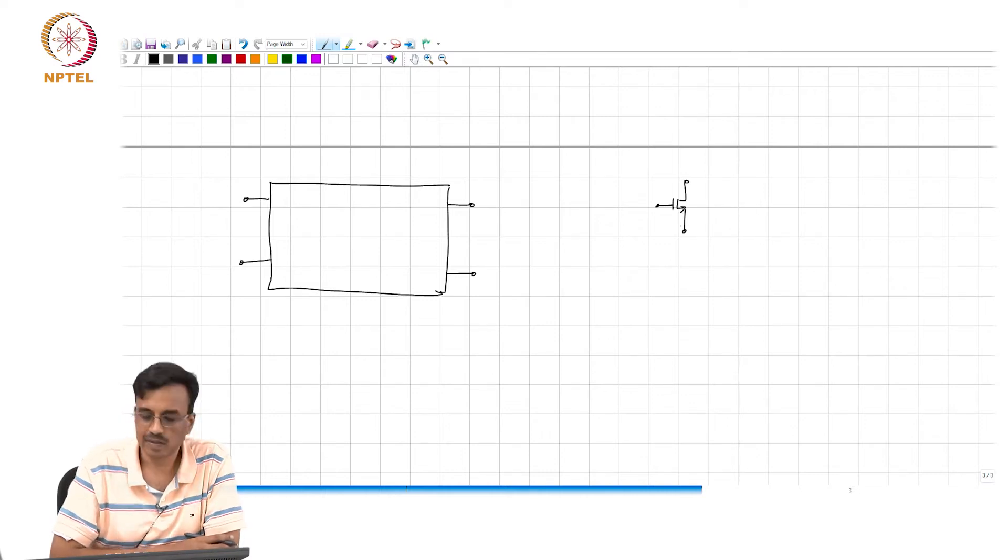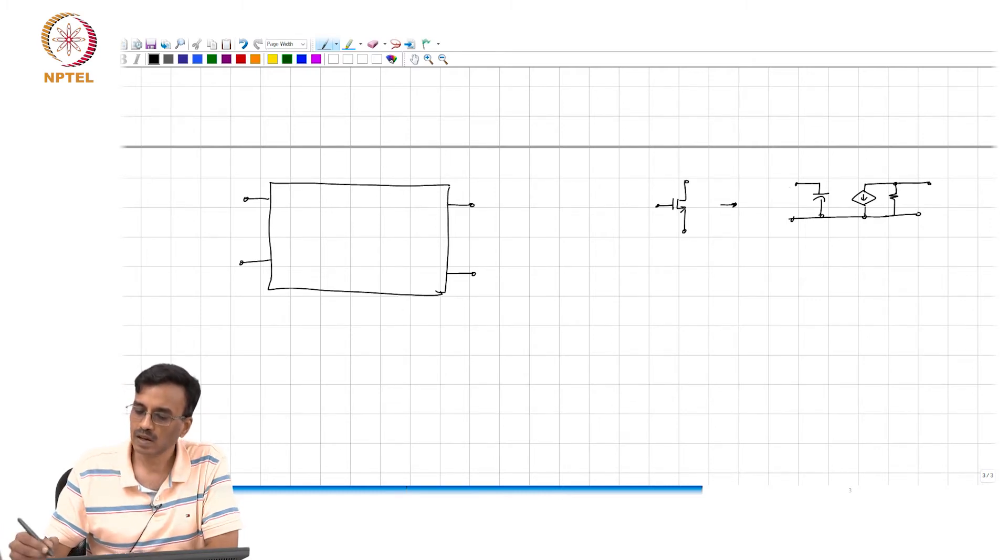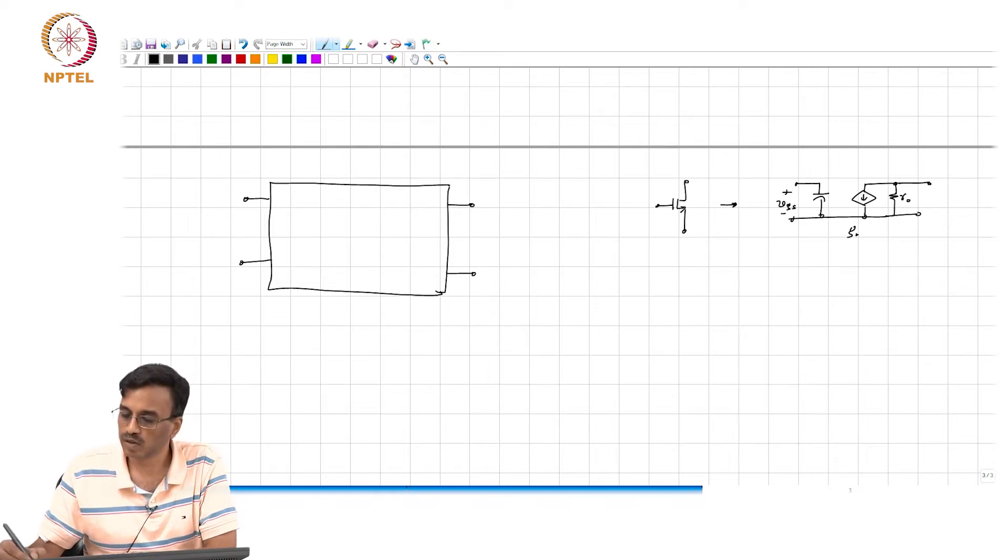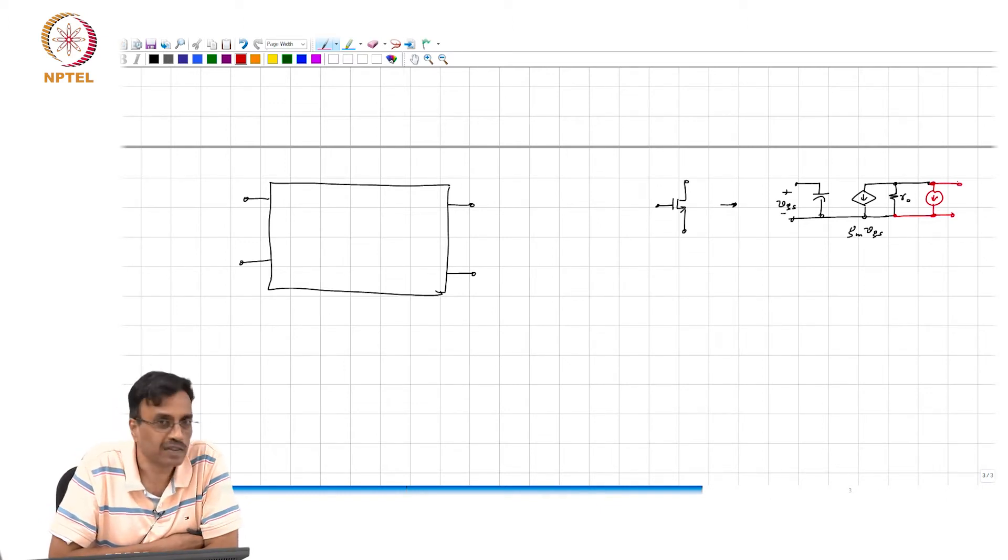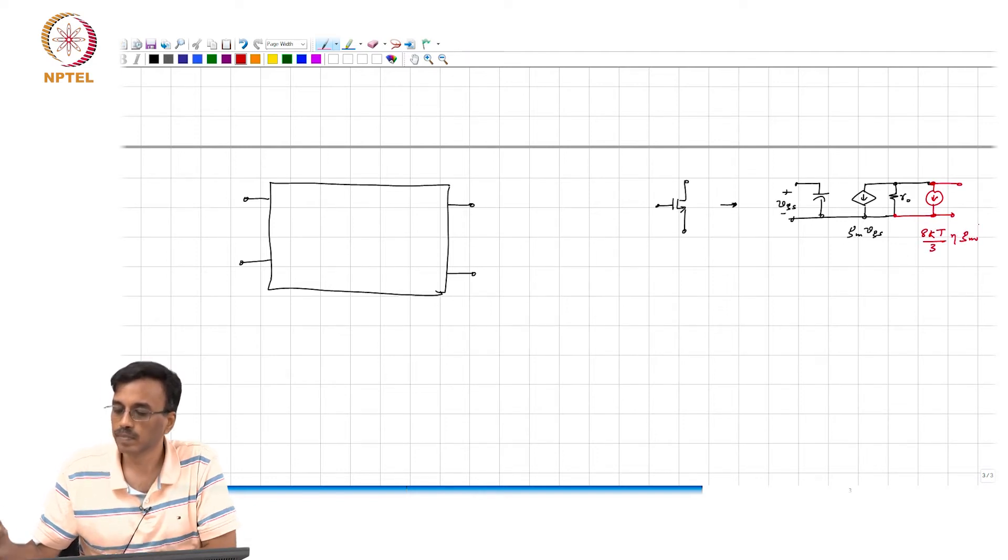And it turns out that every transistor also has noise associated with it. A simplistic model for the noise in a transistor: as far as small signals are concerned, the small signal equivalent of the MOS transistor can be shown to be this one here where this is gm times vgs and this is ro. It turns out that the transistor also adds noise of its own, and to find the spectral density of that noise current, the formula is 8kT over 3 eta times gm.